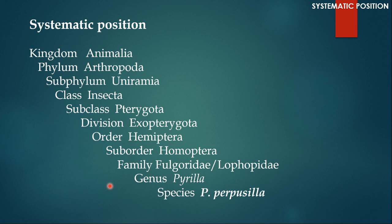Let us start with systematic position. Sugarcane leafhopper, or Pyrilla purpusilla, belongs to phylum Arthropoda, subphylum Uniramia, class Insecta, subclass Pterygota, division Exopterygota, order Hemiptera, suborder Homoptera, family Fulgoridae or Lophopidae, genus Pyrilla, species Pyrilla purpusilla.